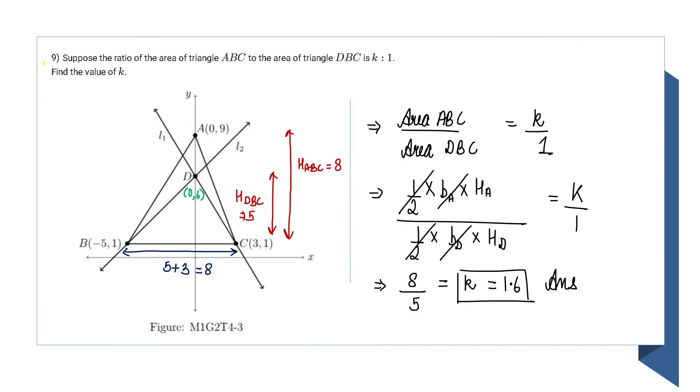Now let's move towards question 9. In this question, I need to find the ratio of the area of triangle ABC and DBC. I can find both triangle areas using Heron's formula, or use the easier method: half into base into height.